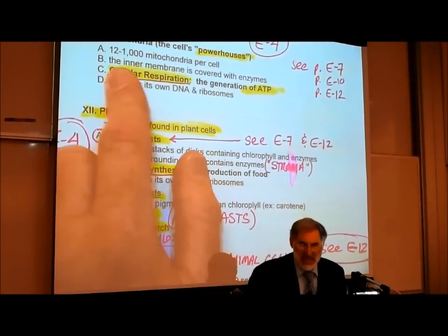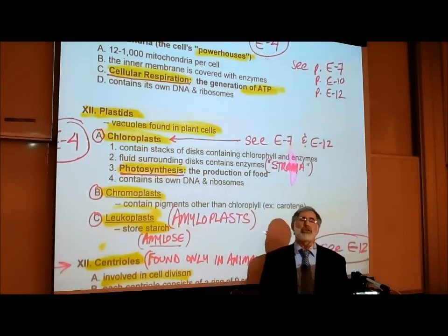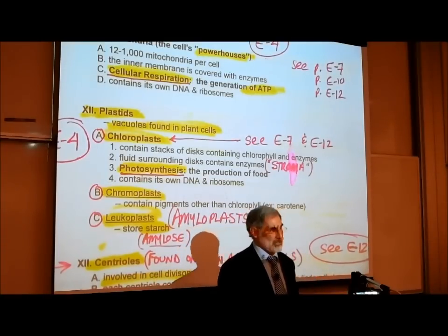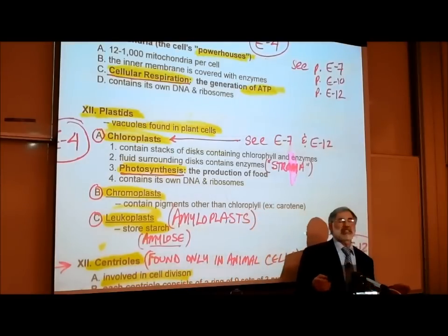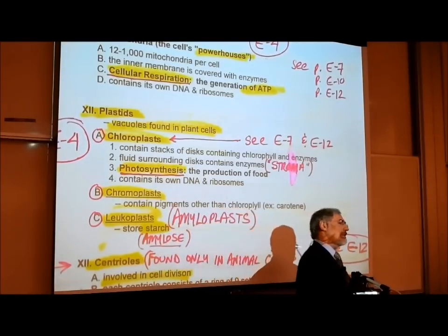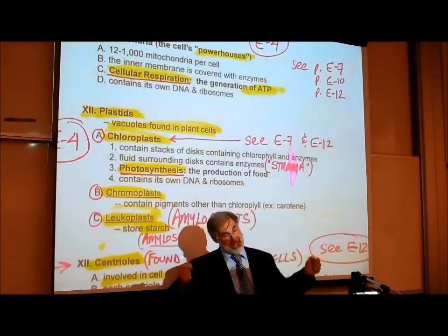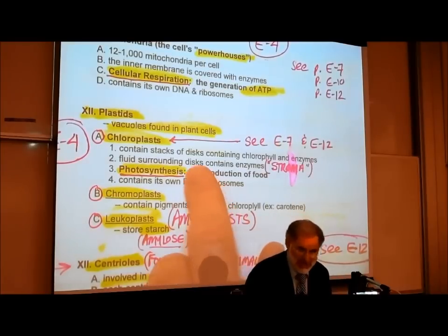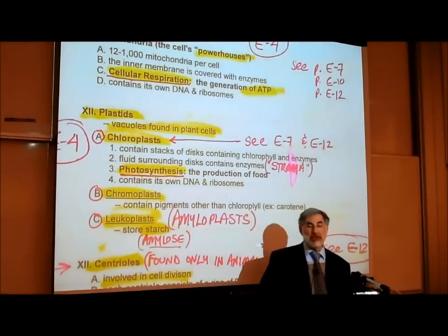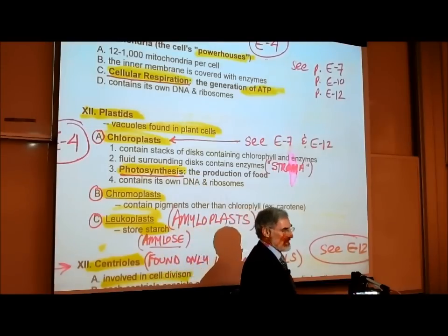Cells vary in their number of mitochondria. Skin cells have very few mitochondria, while muscle cells have hundreds or maybe even thousands. How many mitochondria are found in a cell is an indication of how much energy it requires, because that's where ATP is made. Muscle cells require a lot more ATP to allow us to exercise and run compared to skin cells. Curiously, mitochondria contain their own DNA — mitochondrial DNA — in addition to the DNA found in the nucleus.